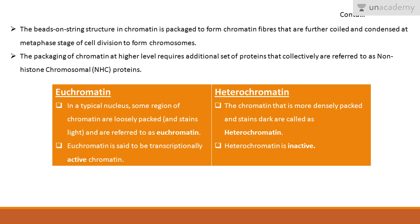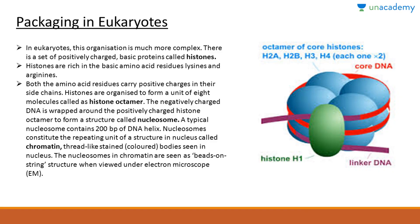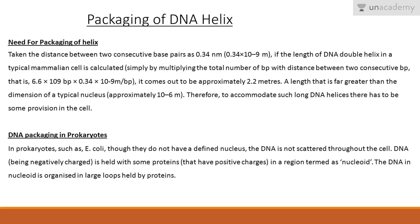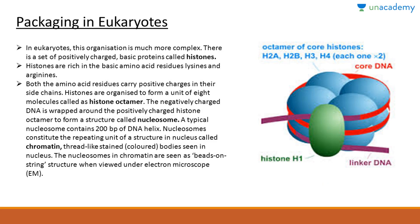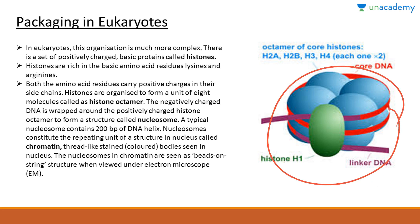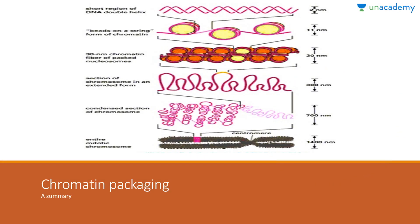Higher-level packaging of chromatin requires an additional set of proteins collectively referred to as non-histone chromosomal proteins. You should understand the difference between euchromatin and heterochromatin. Euchromatin is loosely packed, stains light, and is transcriptionally very active. Heterochromatin is more densely packed, stains dark, and is transcriptionally very inactive. The main difference in packaging between prokaryotes and eukaryotes is that in prokaryotes DNA is packaged in the nucleoid, whereas in eukaryotes it is organized into nucleosomes in a more complex and organized manner.